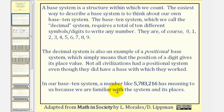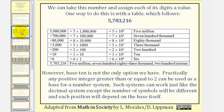In our base 10 system, a number like 5,783,216 has meaning to us because we are familiar with the system and its places. We can take this number and assign each of its digits a value. One way to do this is given in the table. Notice how the 5 represents 5 times 1,000,000, which we can also write as 5 times 10 to the sixth.